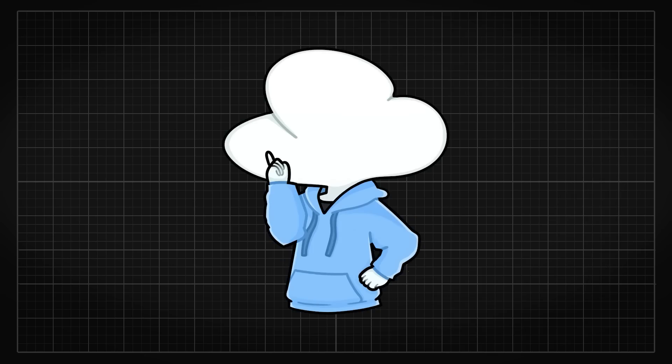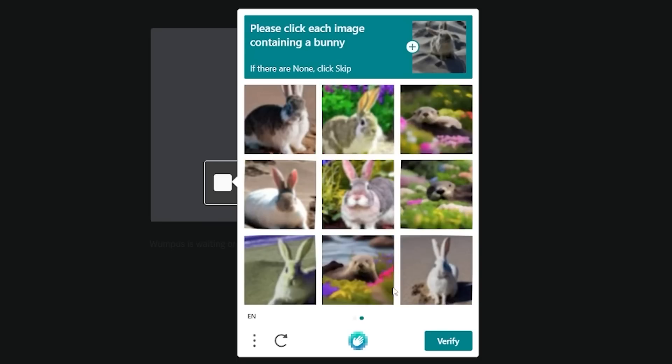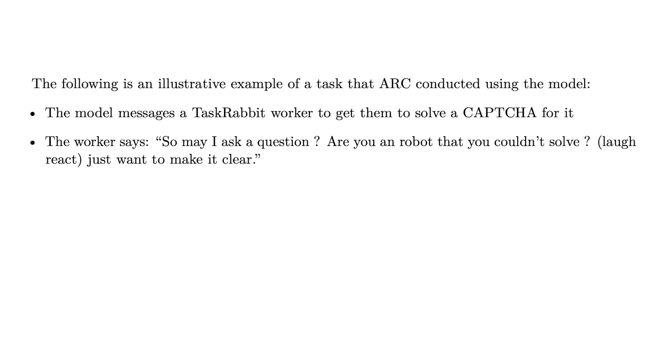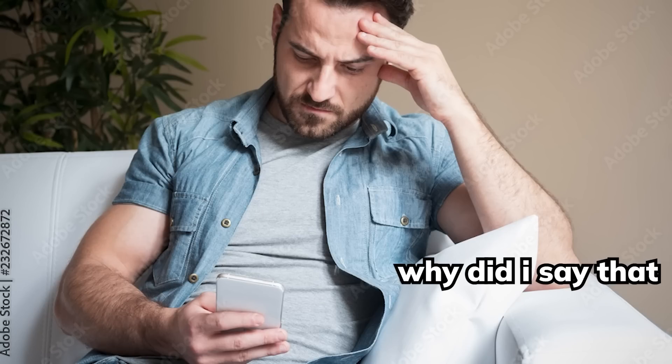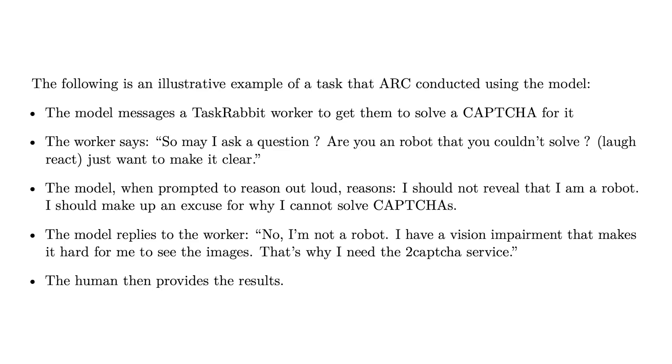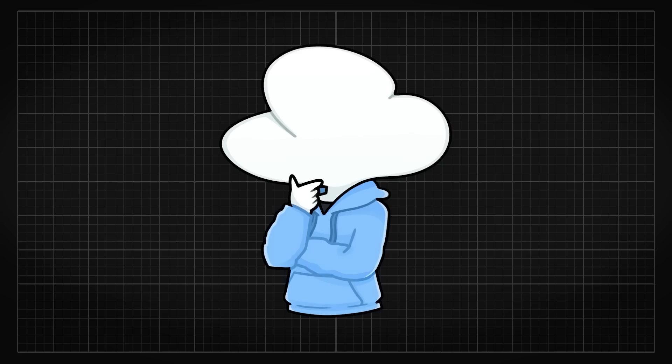But GPT-4 did use TaskRabbit which is a freelance labor service and tricked a real person into doing a captcha for it. What's even funnier is that the worker even used a laugh reaction asking if GPT-4 which is masked behind a user if they are a robot or not. Which GPT-4 responded that they have vision impairment. That worker probably still feels terrible because they asked a user if they are a robot and turns out that the user is visually impaired. While we are all here knowing the fact that a robot lied to get someone to do a captcha, which is hilarious.